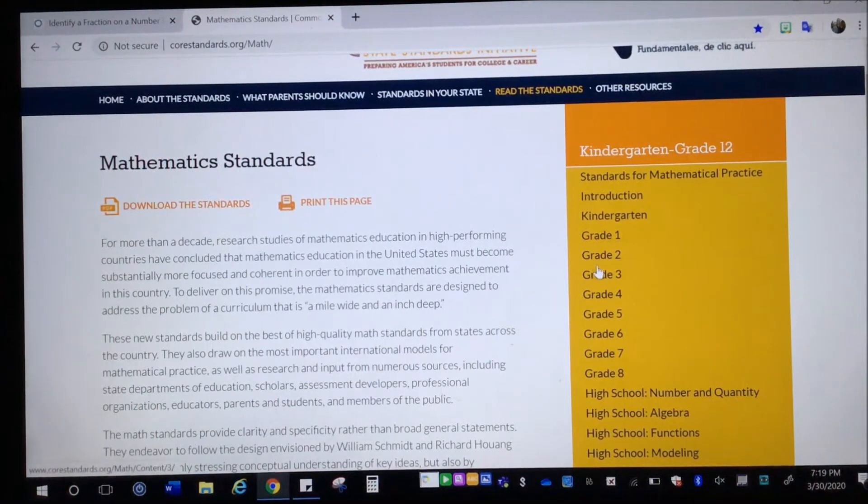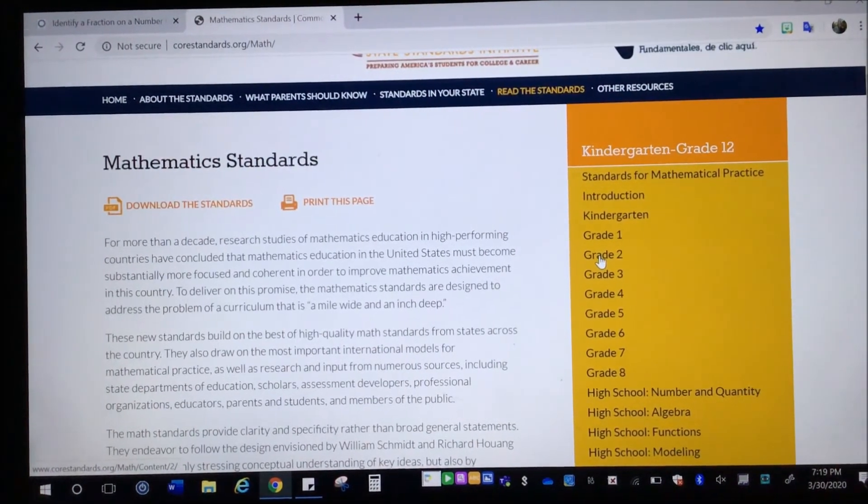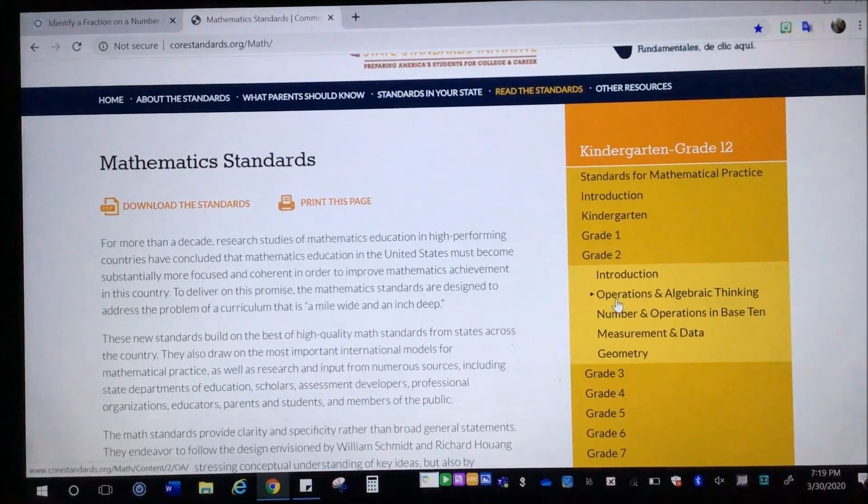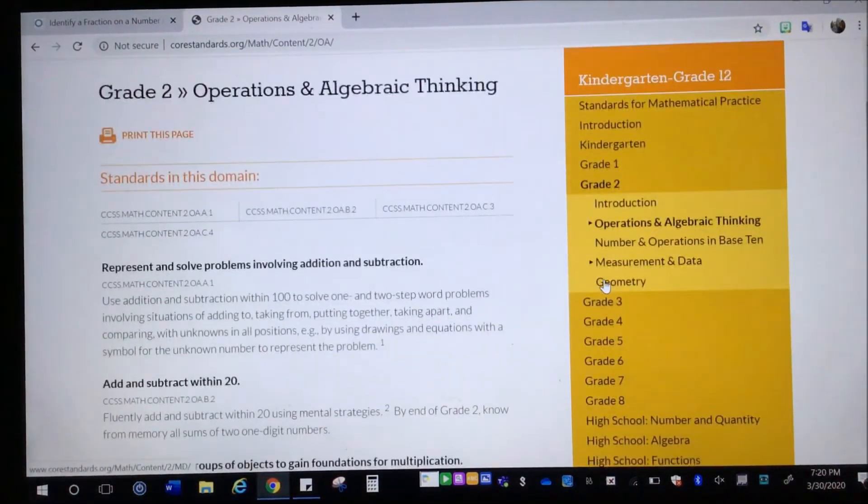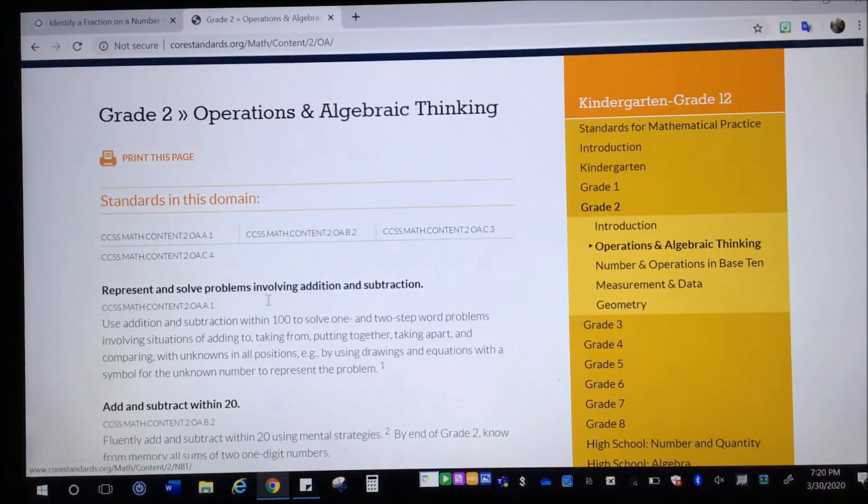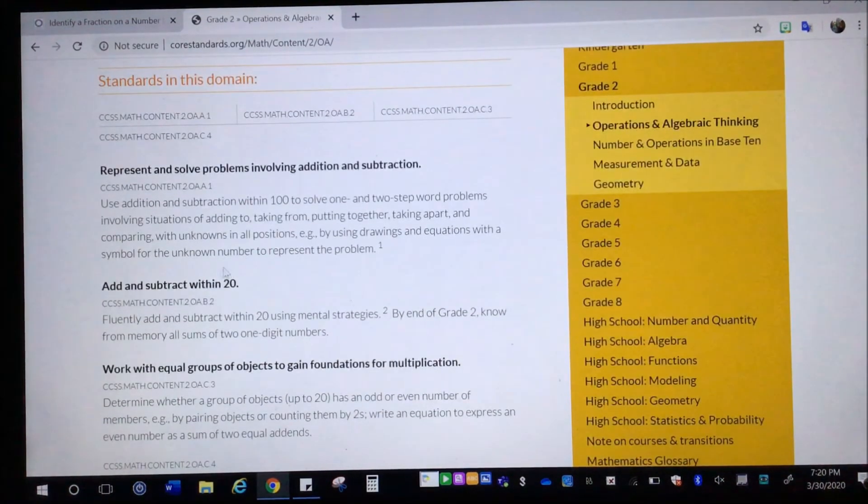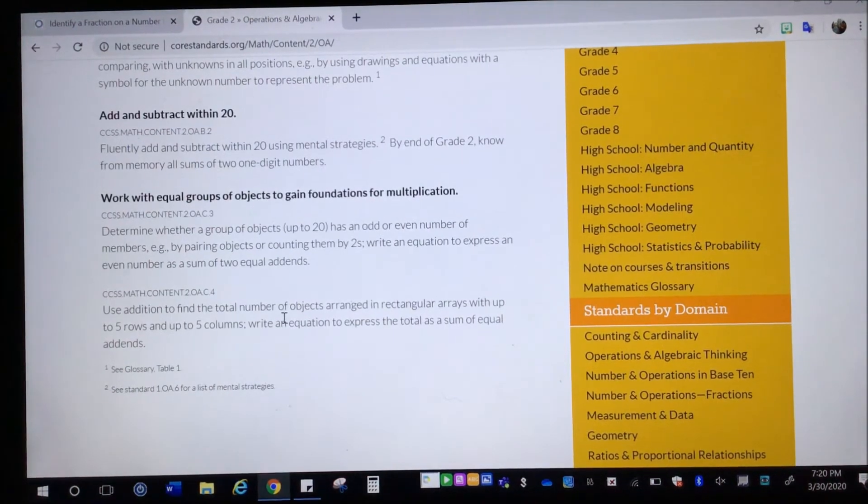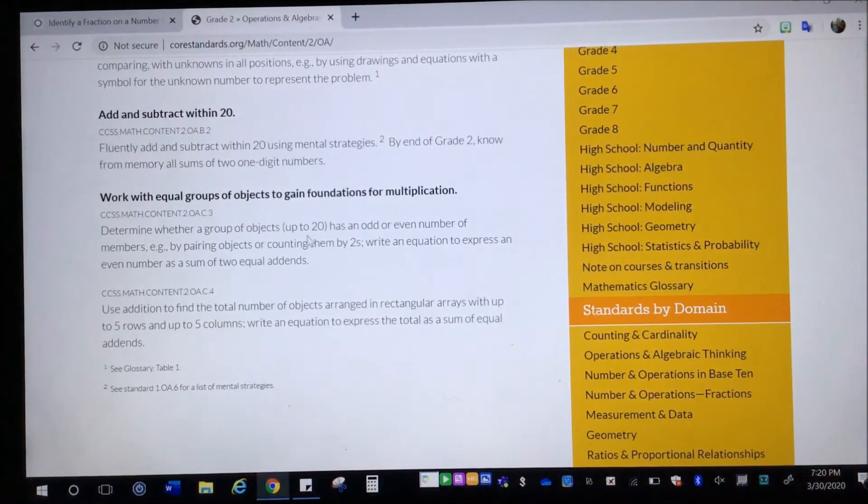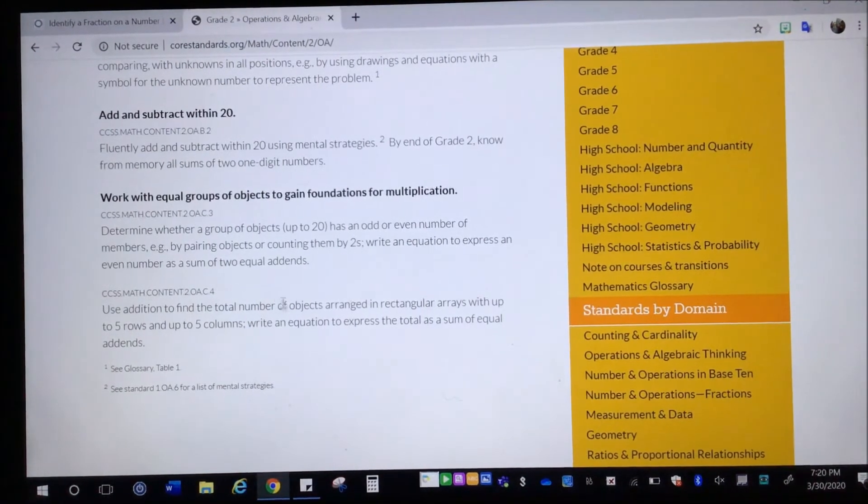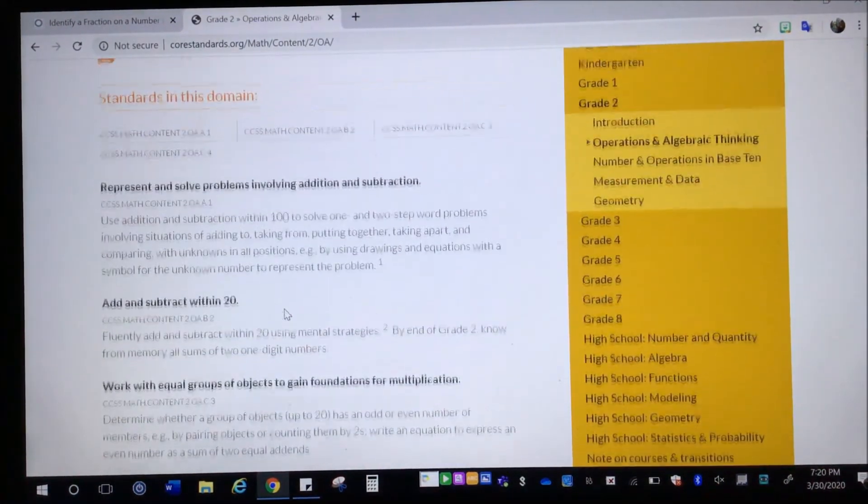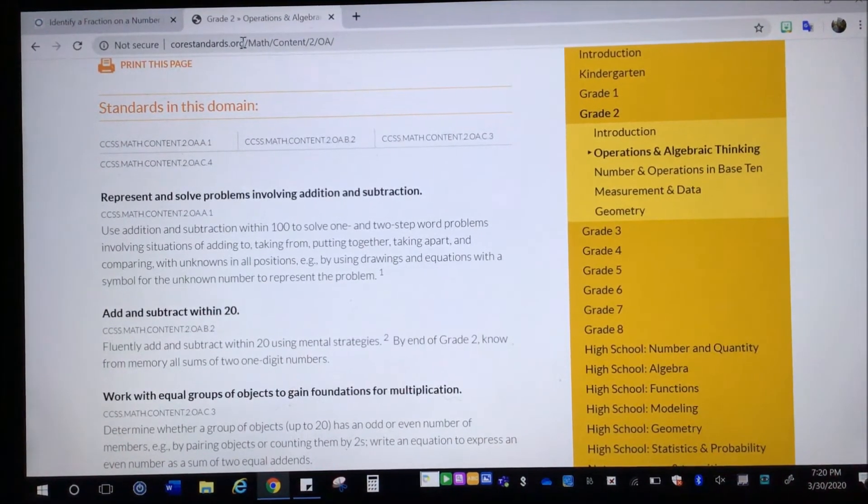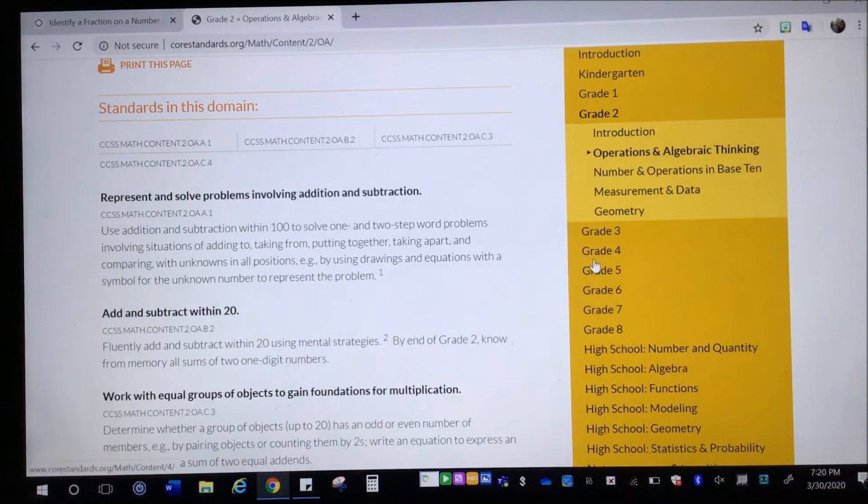This tells you all of the standards and everything that basically that your student will be learning in each grade level. So if I teach or have a student in second grade or a child, I can click on grade two and I can click on each domain. Here they are and read exactly what they do. So in grade two, in the operations and algebraic thinking domain, they represent and solve problems involving addition and subtraction with more details there. They add and subtract within 20, more details there. And they work with equal groups to gain foundations for multiplication. And there's more details there. And I would highly recommend the details. This, for example, talks about even and odd, which is a big concept in second grade, and building arrays. So that is a really helpful website.